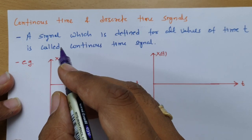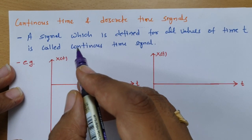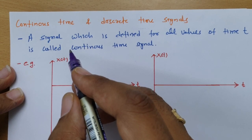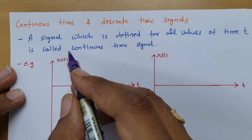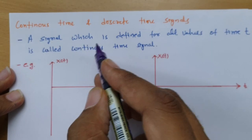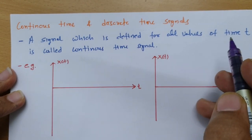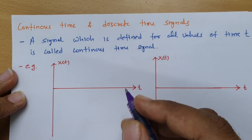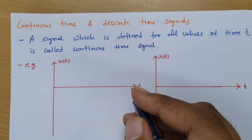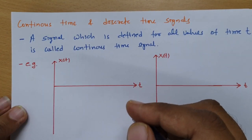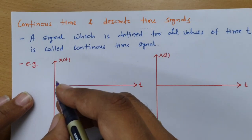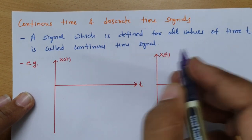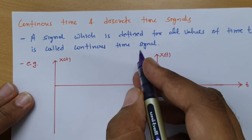A continuous time signal is a signal which has values at all time intervals. A signal which is defined for all values of time is called a continuous time signal. If a signal is having values at all time intervals, then it is a continuous time signal.